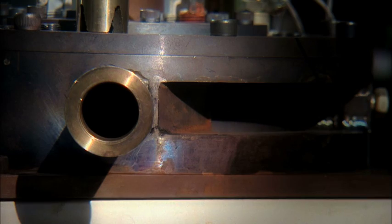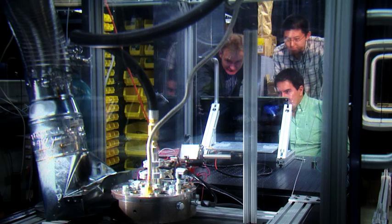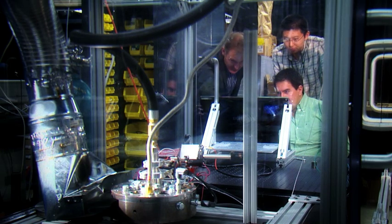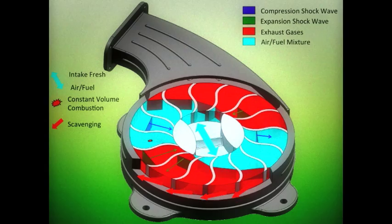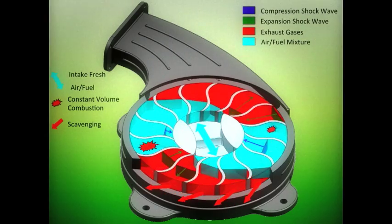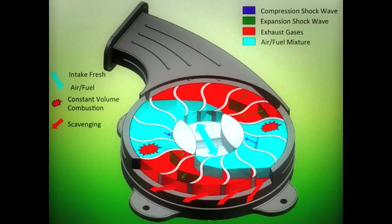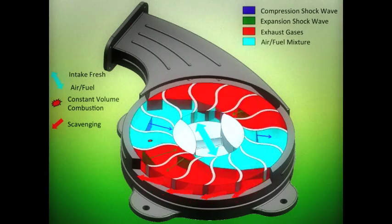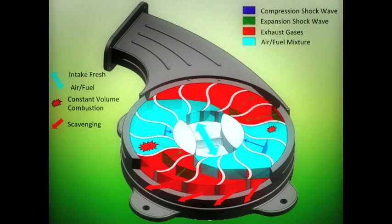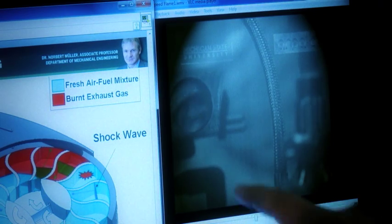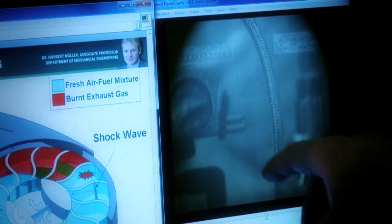The wave disc engine operates on a very simple principle. Basically it sucks in combustible mixture. The mixture gets trapped in the channel. The moment the channel outlet closes a shockwave is generated because this mixture is running against a wall. The shockwave compresses the fluid, raises the pressure and temperature and ignition occurs. After ignition we have combustion.